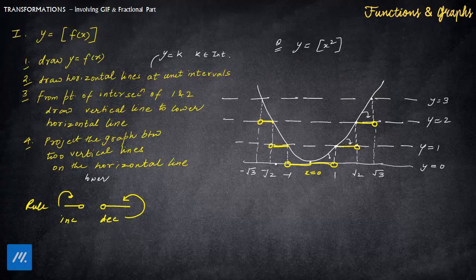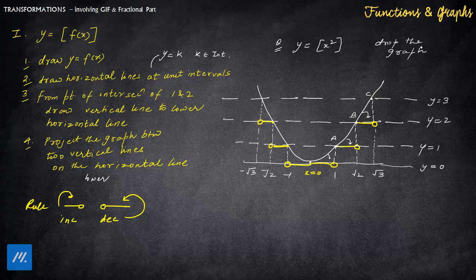This sometimes becomes confusing; I would suggest going through the entire video once again. Let me just reiterate the rules very quickly: draw y = f(x), draw horizontal lines, and from the points of intersection A, B, C — draw vertical lines to the horizontal line below. Then drop the graph to the line below it. For open circles: if the graph is increasing (y increases as x increases), open circle is on the right; otherwise open circle is on the left.